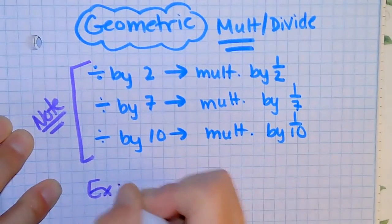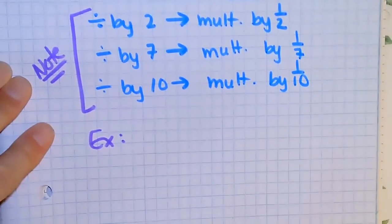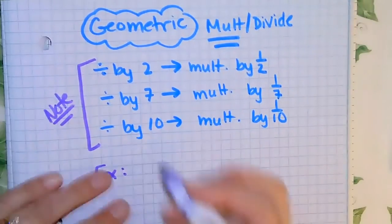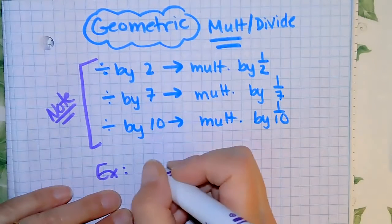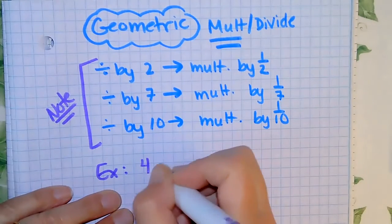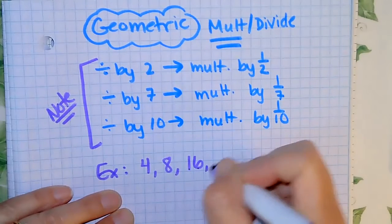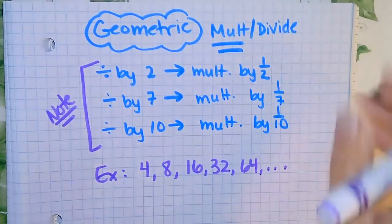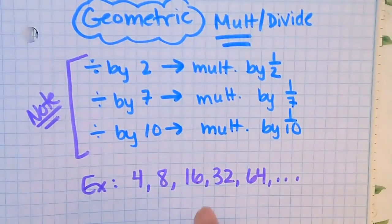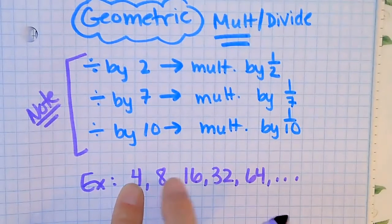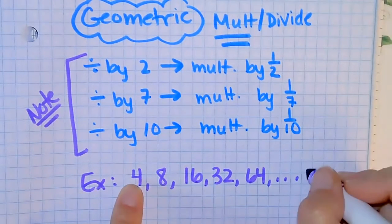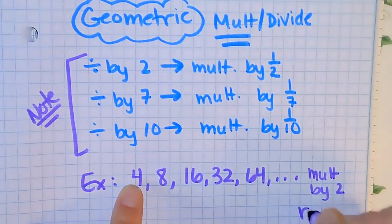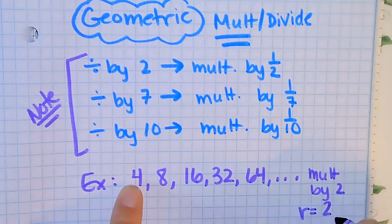So let's say I have the sequence 4, 8, 16, 32, 64, dot dot dot. We're trying to decide what are we doing — in this case I am doubling, timesing by two. So this is multiply by two. If I multiply by two, we call it our common ratio, and our ratio is two.